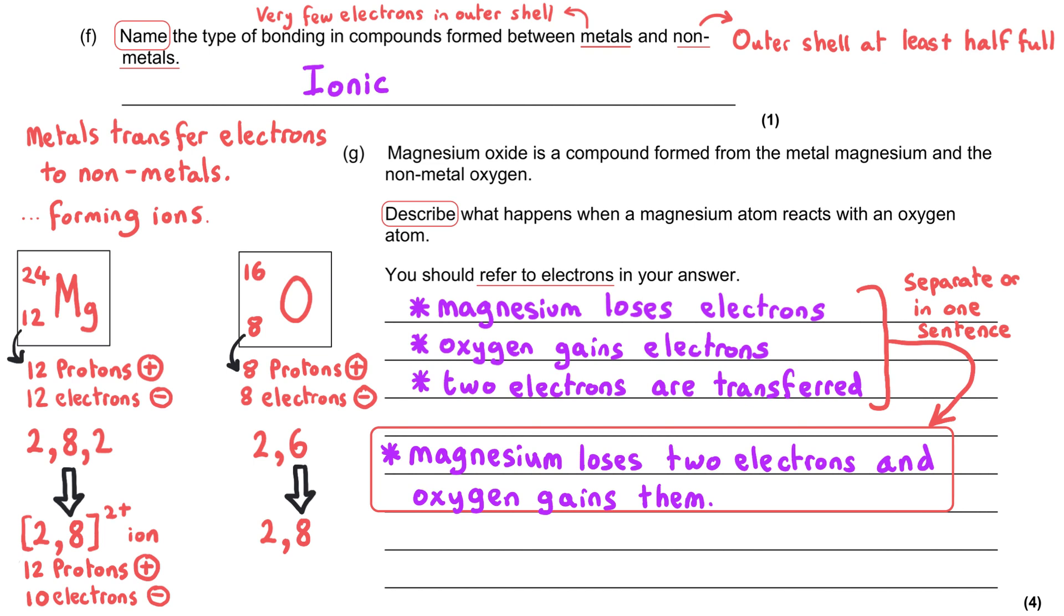And then in the same way, the oxygen has got eight protons and eight electrons when it's an atom. Once it's gained those two electrons, it's still got eight protons, but it's now got 10 electrons. And so this gives the oxygen an overall charge of minus two.